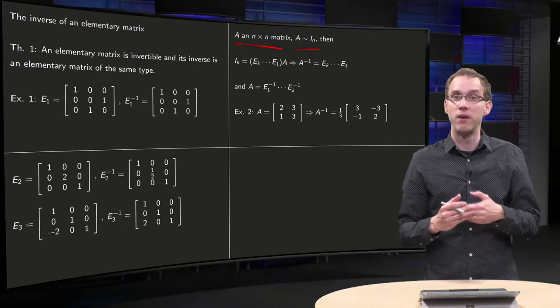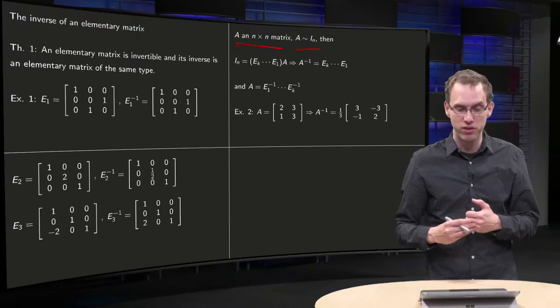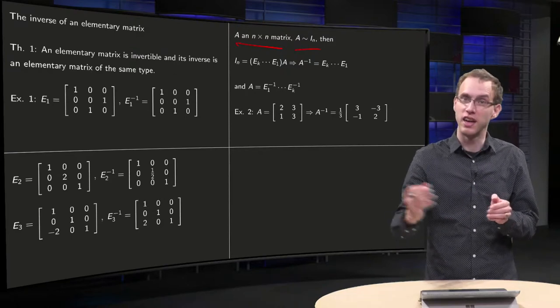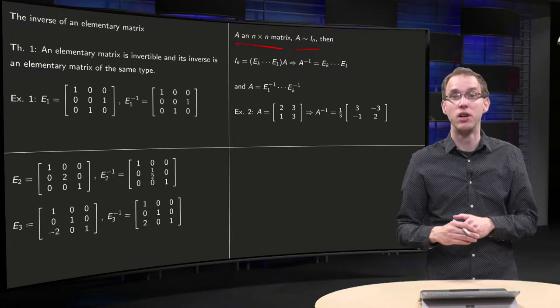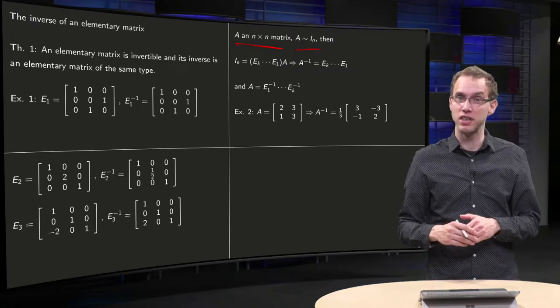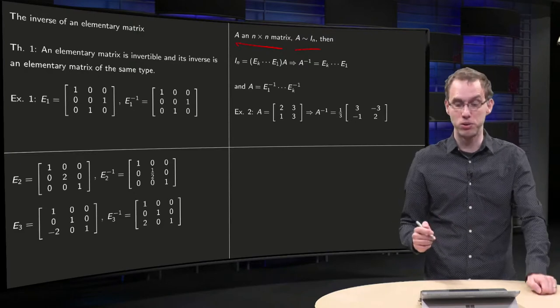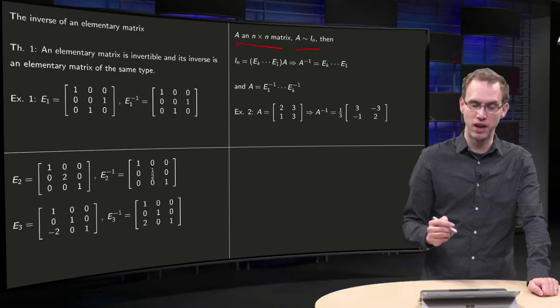You know from the invertible matrix theorem that if you can row reduce A to the identity matrix, then A is invertible, and if you can't row reduce A to the identity matrix, then A is not invertible. So let's assume A is invertible and you can row reduce it to the identity matrix.